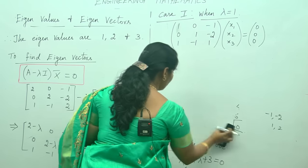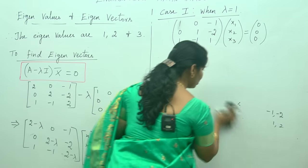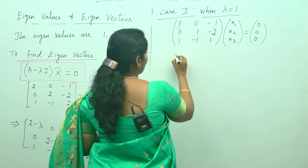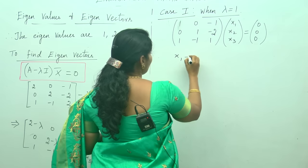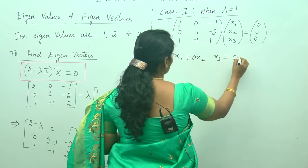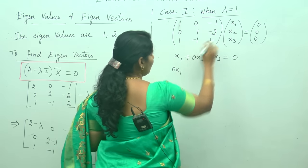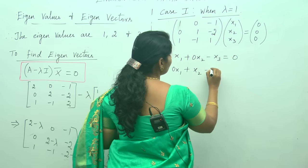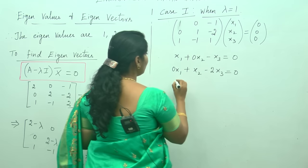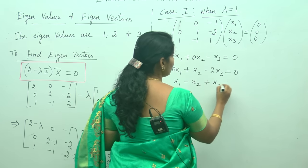Performing matrix multiplication — rows times columns — gives three equations: x1 minus x3 equals 0; x2 minus 2x3 equals 0; and x1 minus x2 plus x3 equals 0.